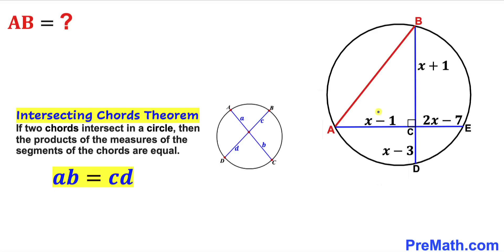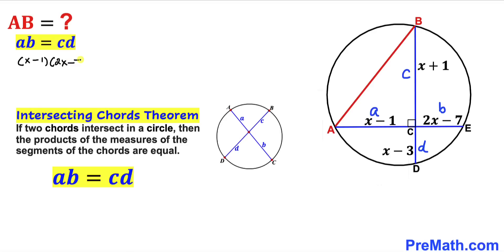Therefore let me go ahead and label this segment as lowercase a, this segment lowercase b, this c, and this d. Let's go ahead and fill in the blanks in this formula. In our case, a is x minus 1, times b which is 2x minus 7, equals c which is x plus 1, times d which is x minus 3.